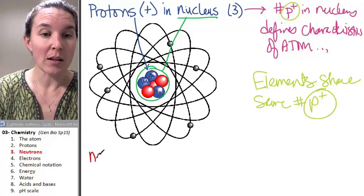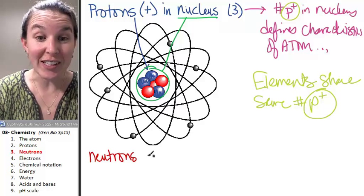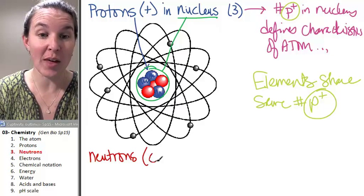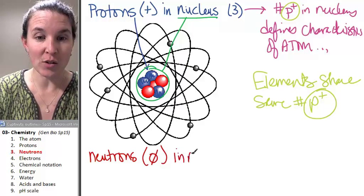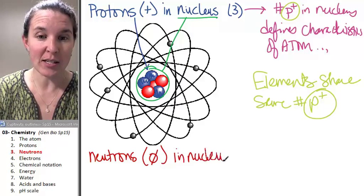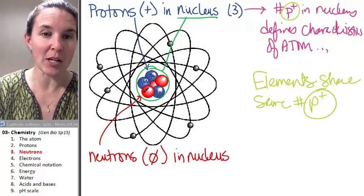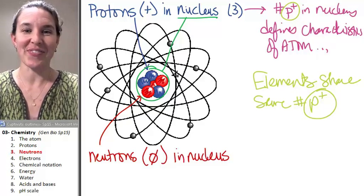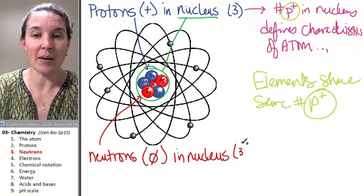Neutrons are neutrally charged particles, so they have no charge at all, and they're also found in the nucleus. I tried to color code this to show you how many neutrons do I have in this atom here?